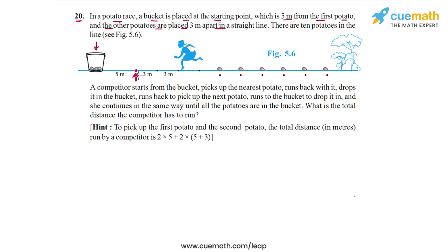So here we have the first, then the second potato, the third potato, the fourth potato and so on. Every potato is placed 3 meters apart from the previous one. There are 10 potatoes in the line in all, and you can see 6 of them in the figure that's shown.